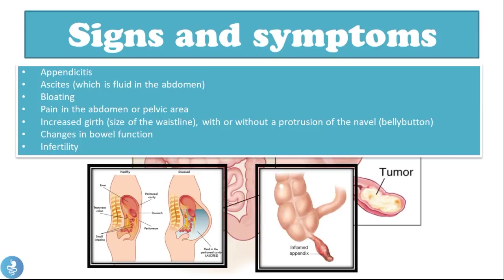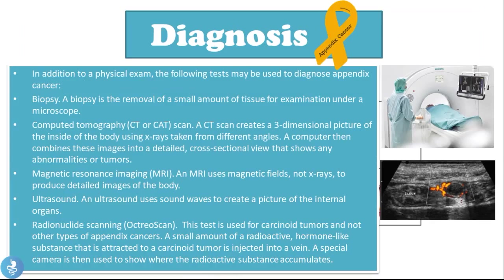Now that we've covered the types of appendix cancers, let's discuss signs and symptoms. These patients may suffer from appendicitis, ascites (fluid buildup in the abdomen), bloating, pain in the abdomen or pelvic area, an increased girth (waistline size) with or without protrusion of the navel, changes in bowel function, and infertility.